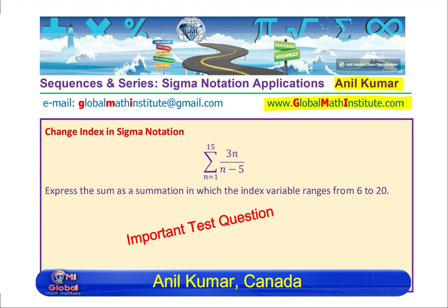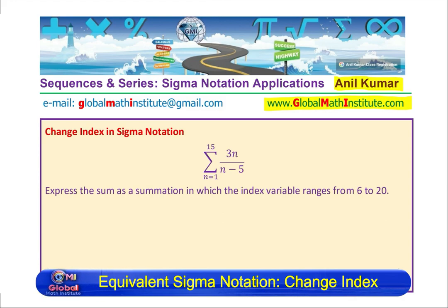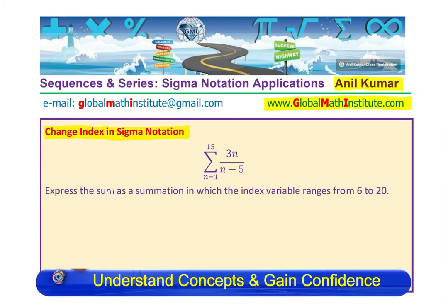In this video, we are going to understand a very important concept and that is how do we change index in sigma notation. We will consider two questions. The very first one here is express the sum as summation in which the index variable changes from 6 to 20.